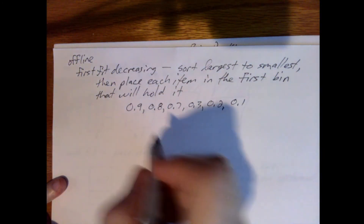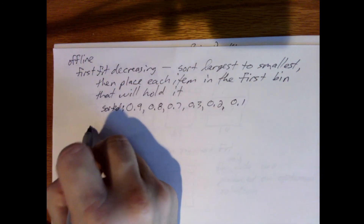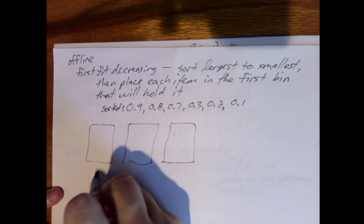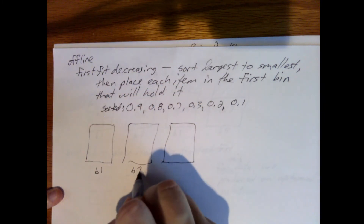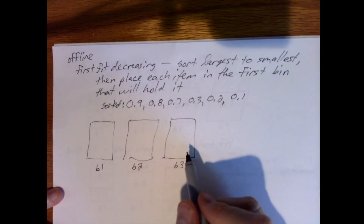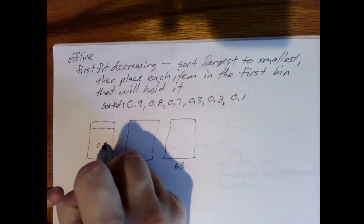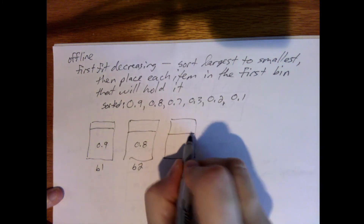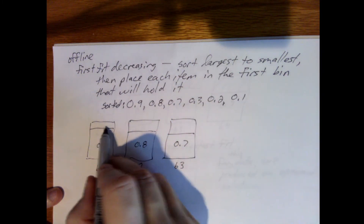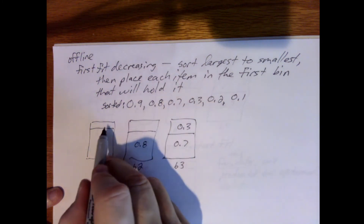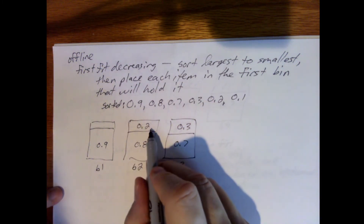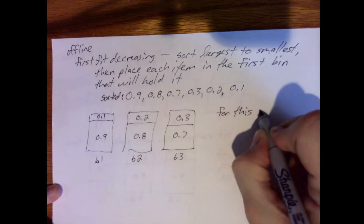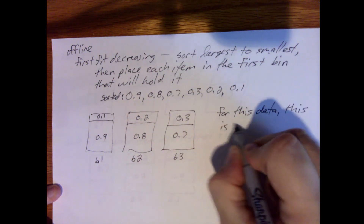Those are the same items we had before, but now sorted. We place 0.9 in bin 1. Then 0.8 won't fit, so it starts bin 2. Then 0.7 won't fit in bin 1 or bin 2, so it starts bin 3. Then 0.3 won't fit in bin 1 or bin 2, but fits in bin 3 — filling it. Then 0.2 won't fit in bin 1, but fits in bin 2 — filling it. Finally, 0.1 fits in bin 1, filling it. Once again, for this data, this is an optimal solution.